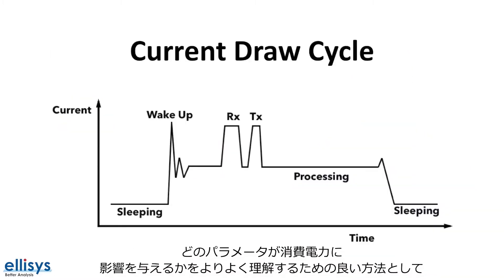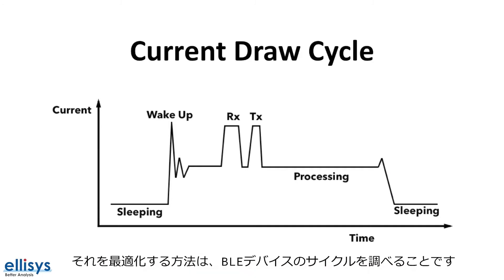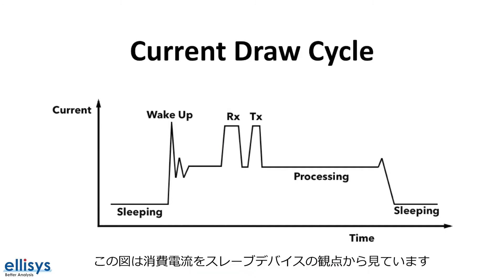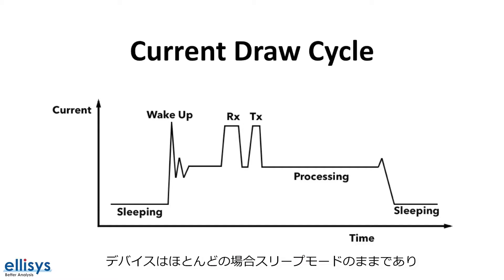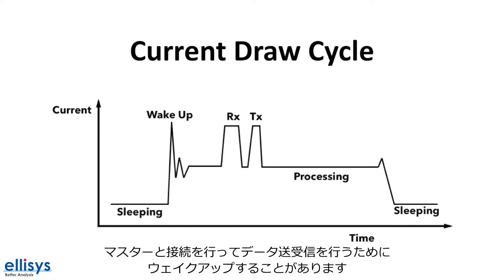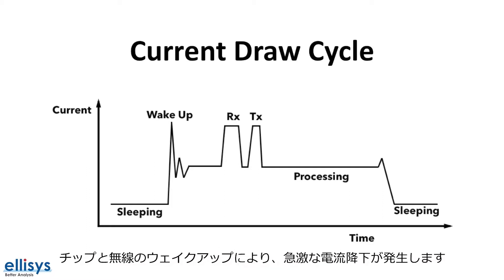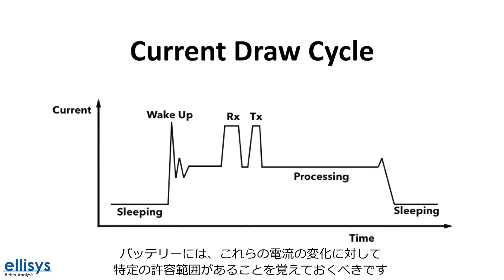A good way to better understand what parameters impact power consumption and how to optimize it is to look at the cycle of the BLE device — in this case, from the slave device's perspective. Here's a graph showing the current consumption level on the y-axis and time on the x-axis. The device stays in sleep mode most of the time and occasionally wakes up at the connection interval to send and receive data from the master. The wake up of the chip and radio causes a spike in current draw, so keep in mind that some batteries have specific tolerances for these current spikes.